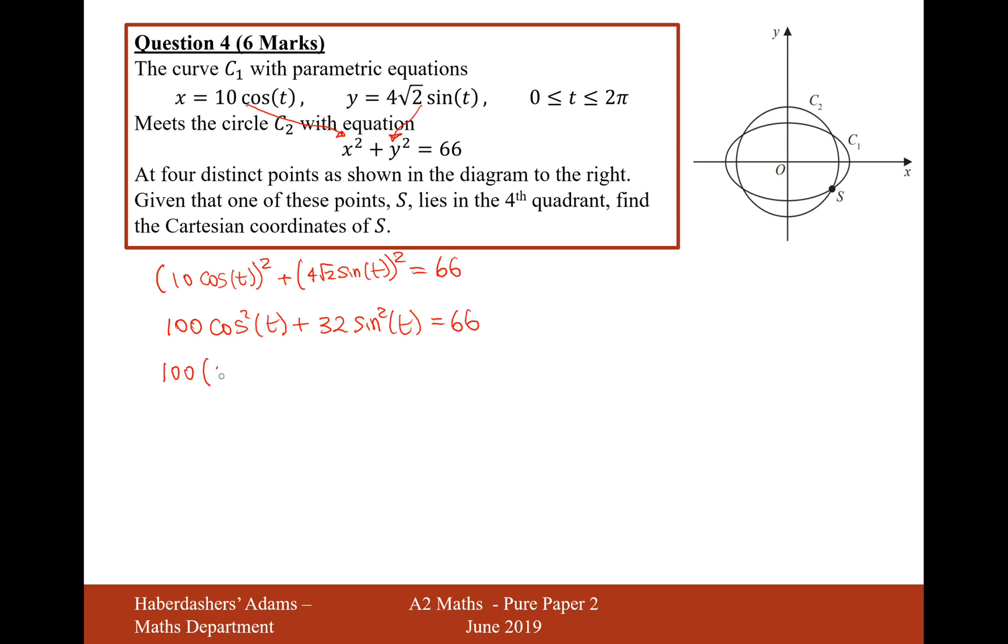So it's going to be 100, 1 minus sine squared, plus 32 sine squared t equals 66.